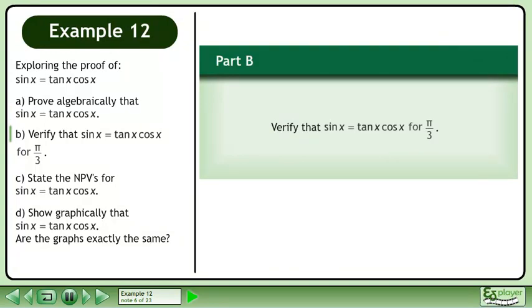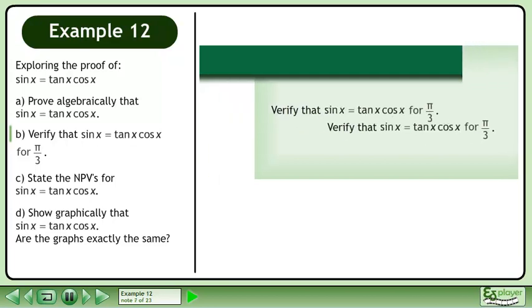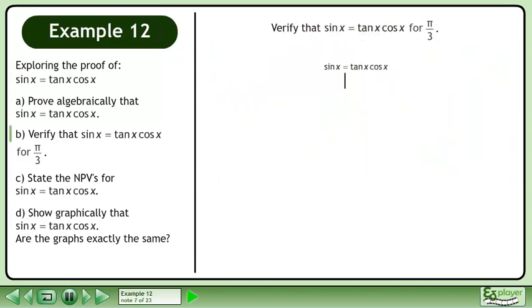In Part B, verify that sin x equals tan x times cos x for π over 3. Rewrite the statement and draw a line. On the left side, plug in π over 3. Sin of π over 3 equals root 3 over 2.